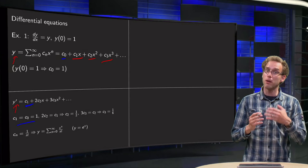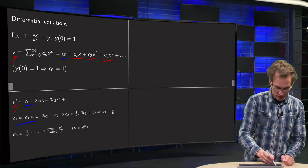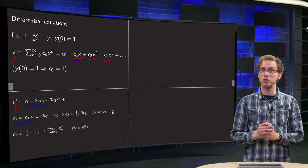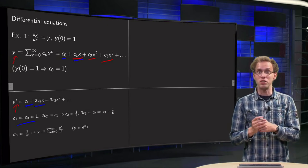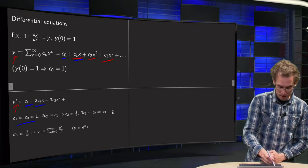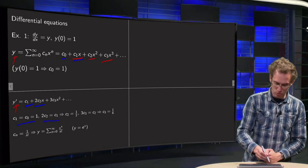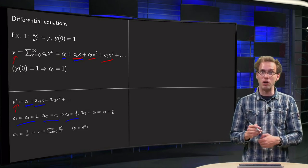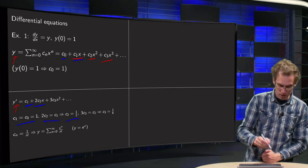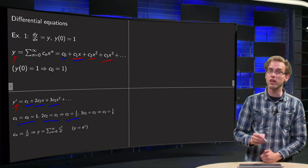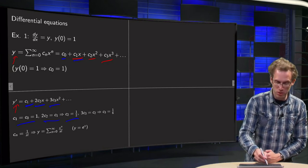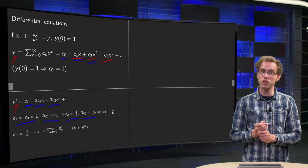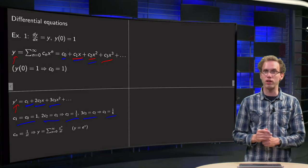Comparing coefficients of x¹: 2·c2 equals c1, so c2 equals 1/2. Continuing to x²: 3·c3 equals c2, so c3 equals 1/6.